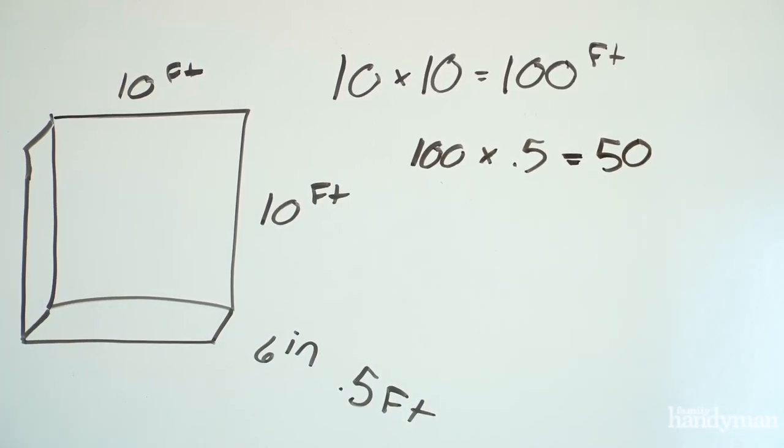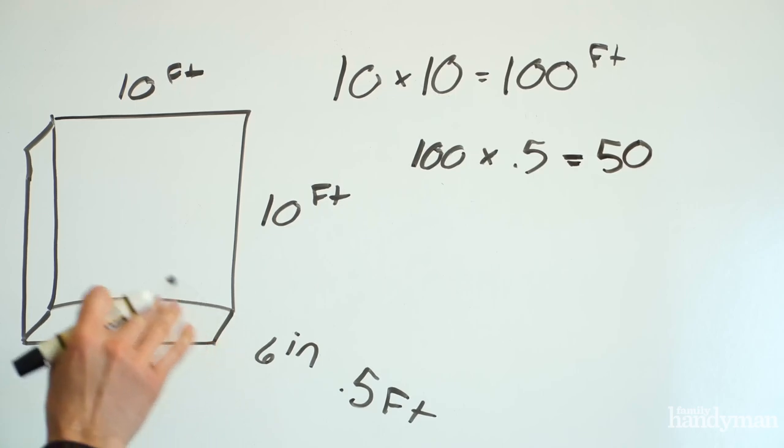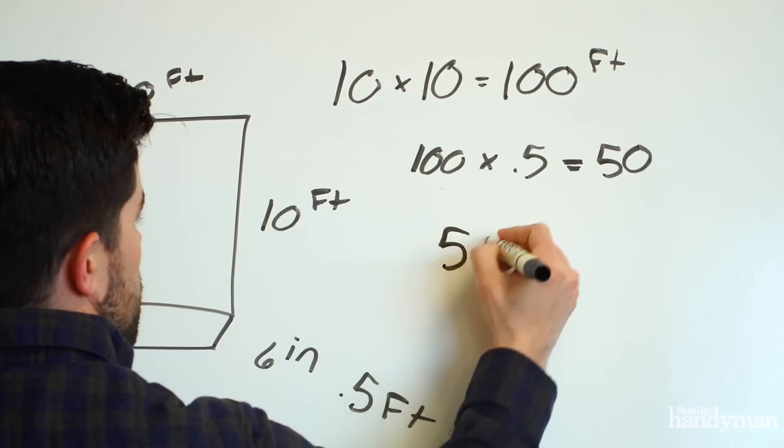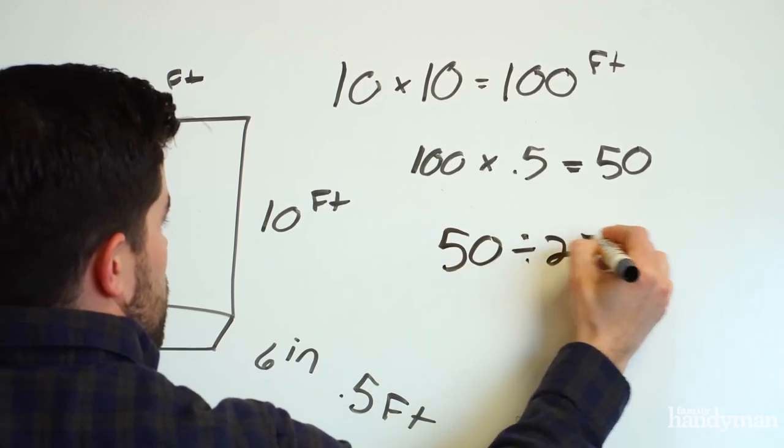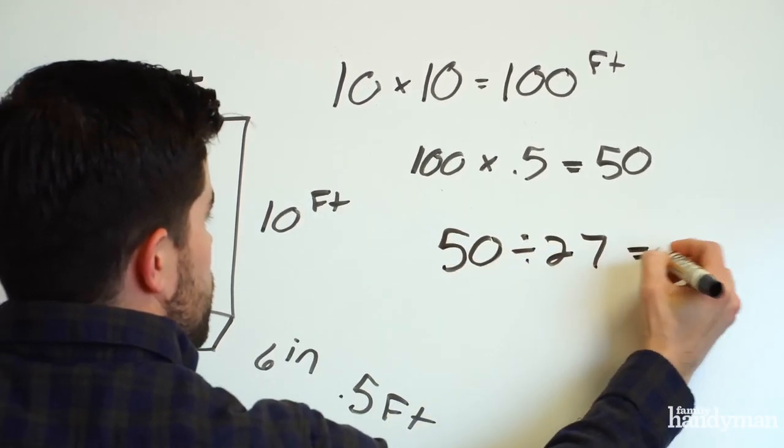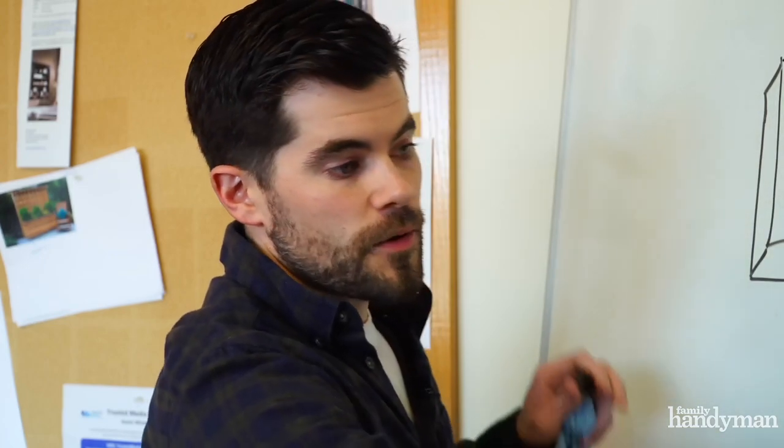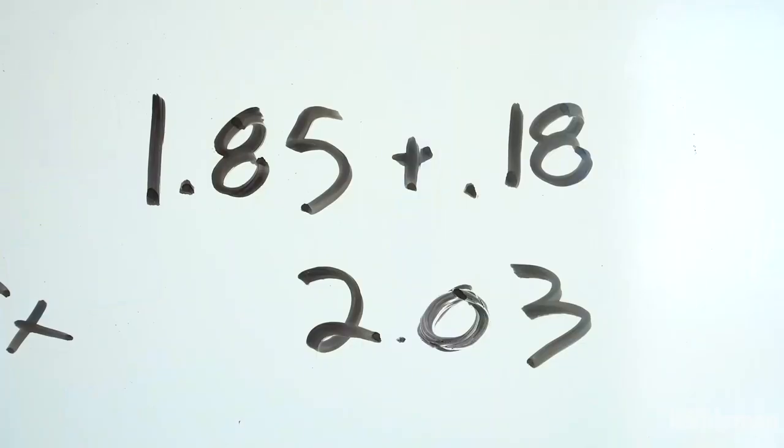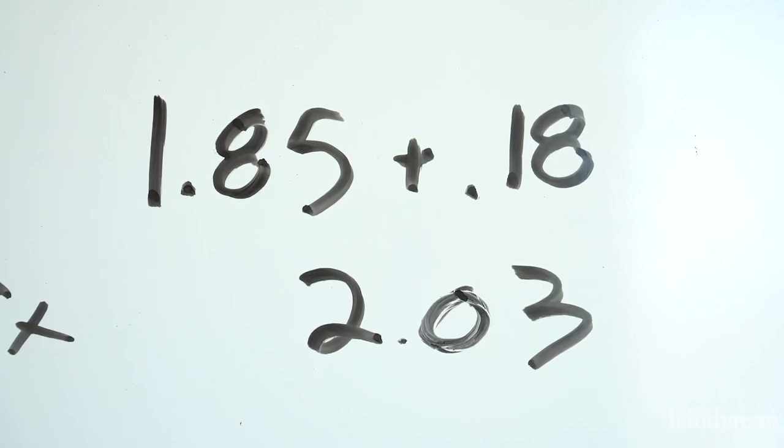Once you have that number you need to take that divided by the number of cubic feet in a cubic yard, which is 27, which gives you 1.85 cubic yards so far. Now we want to take into account spilling and variances in the ground. So we're gonna add 10% to that number. 1.85 plus 0.18 will give you 2.03. You're pretty safe to just order two cubic yards to make it an even number and make it easier on yourself.